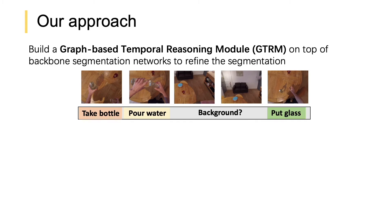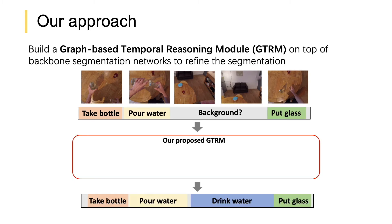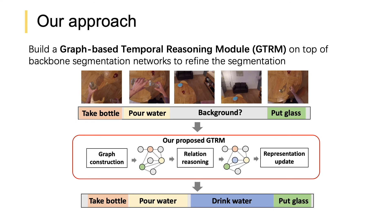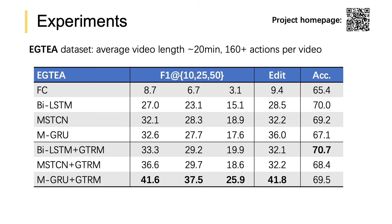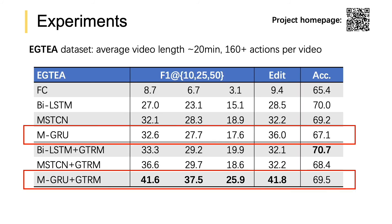Based on this motivation, we propose a graph-based temporal reasoning module on top of backbone segmentation networks to refine the segmentation. We use graph convolution network as a key tool to model the temporal relation and update the features. Experiments on the eGTA dataset show the improvement gained by GDRM is significant.